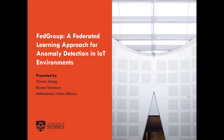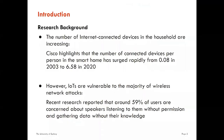And this is not alarmist. Research highlights that the number of connected devices per person in a smart home has surged rapidly from 0.08 in 2003 to 6.58 in 2020. Internet devices help people save money and time, but also help people stay fit, healthy, safe, and enable effortless communication with friends and family.